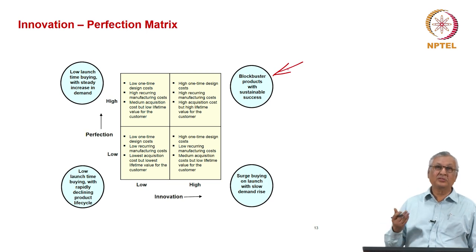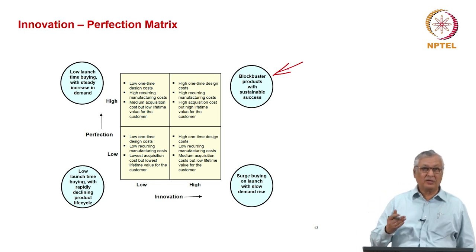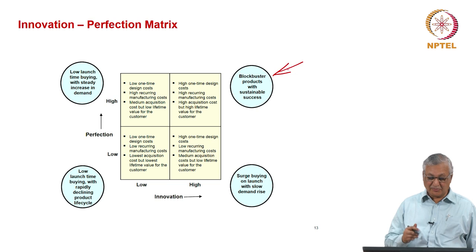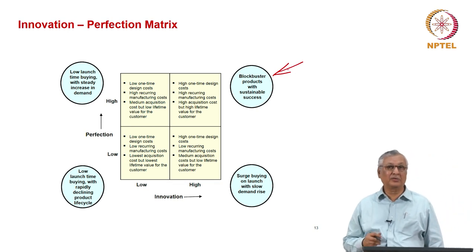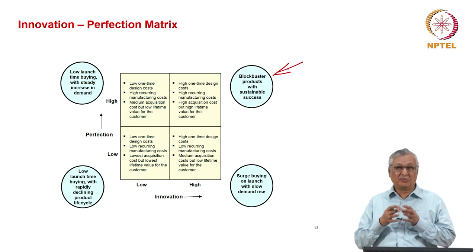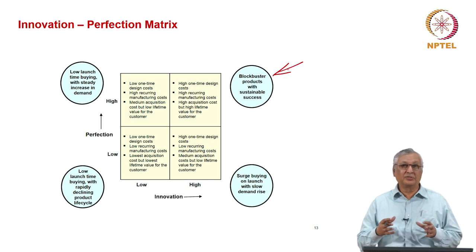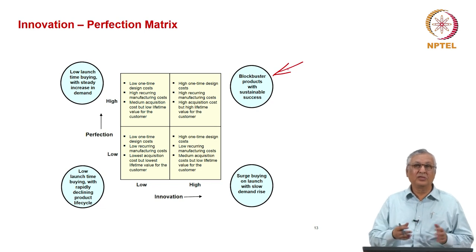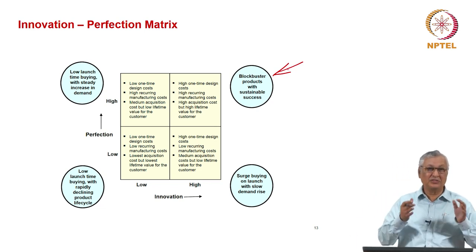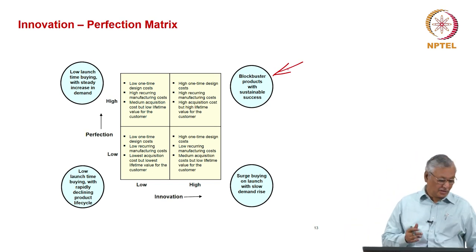Now, what does a start-up do? A start-up could aim to do a Blockbuster product straight away, but the start-up can also find ways and means to move products from the low-low quadrant to the high-low or low-high quadrant, or eventually to the high-high quadrant. So, the way you analyze a product in terms of its core and peripheral elements — and make sure you have got the technologies to upgrade those products either in terms of innovation or perfection or both — that is the start-up opportunity. This innovation-perfection matrix is one kind of platform by which you analyze your opportunities.